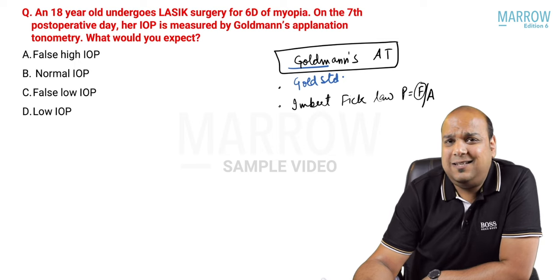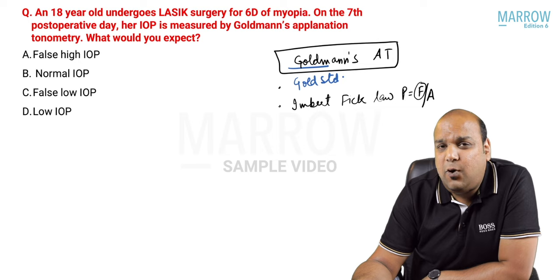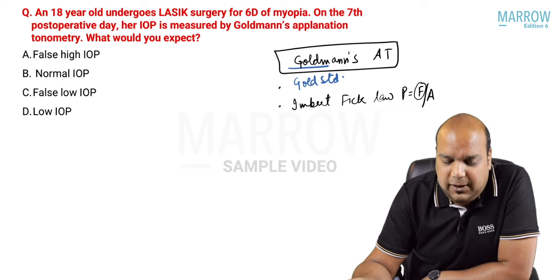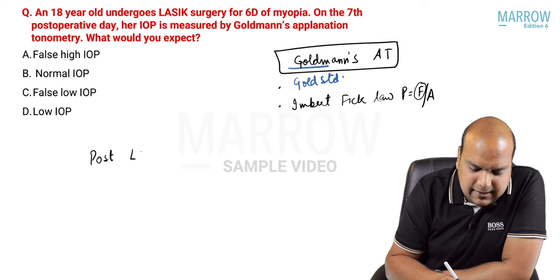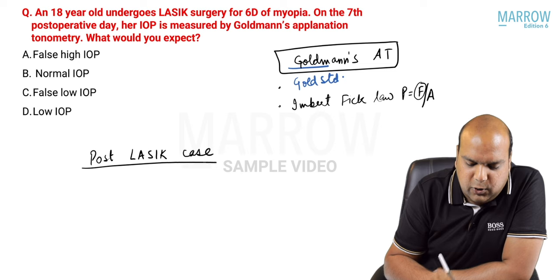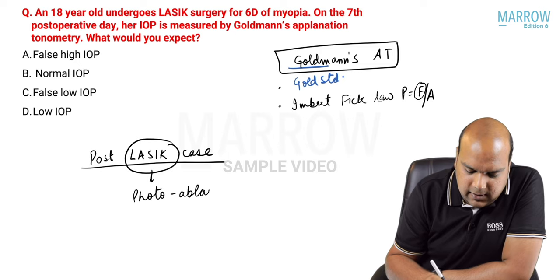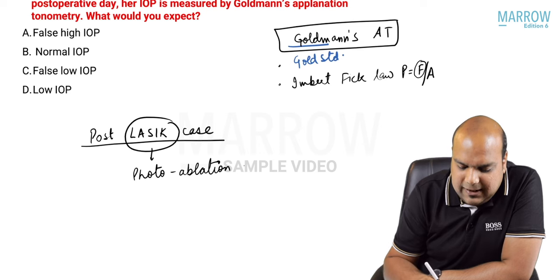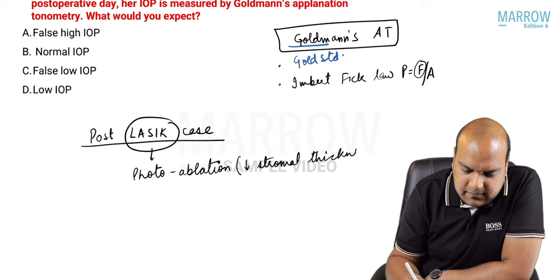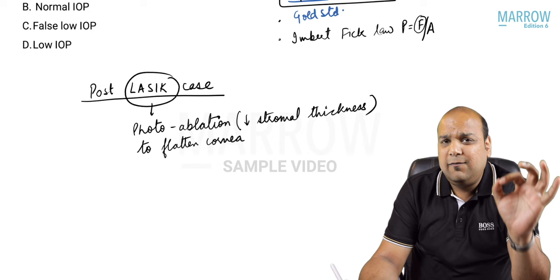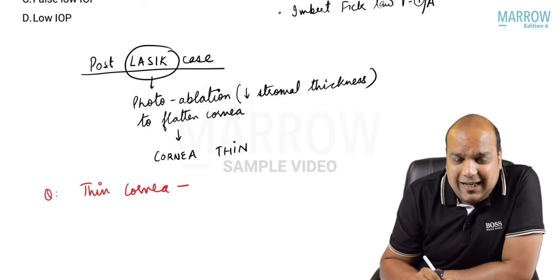The force needed to flatten the cornea is more if the cornea is thick and less if the cornea is thin - that is the fundamental drawback of Goldmann's in post-LASIK cases. In LASIK, we photo-ablate the cornea, which means decreasing the corneal stromal thickness to flatten the cornea. So we are making the stromal thickness less.